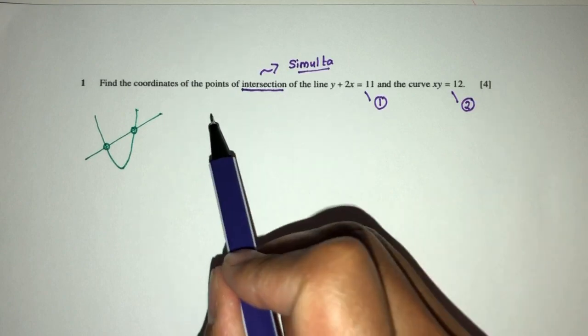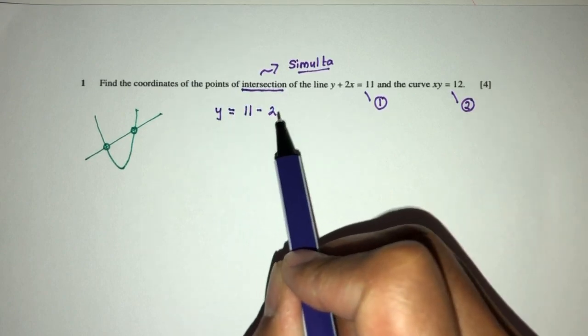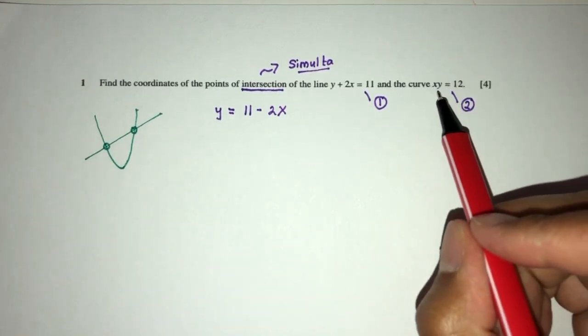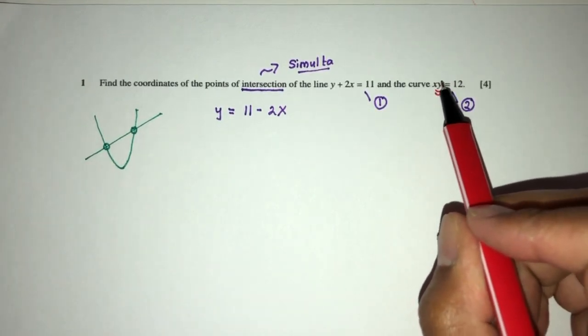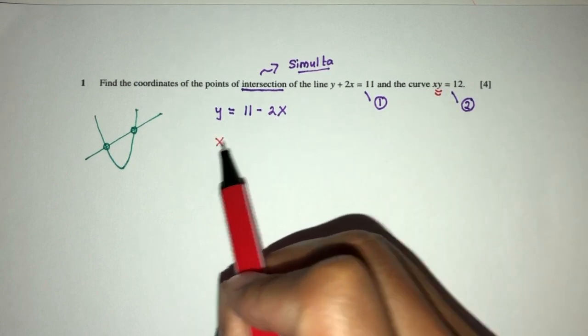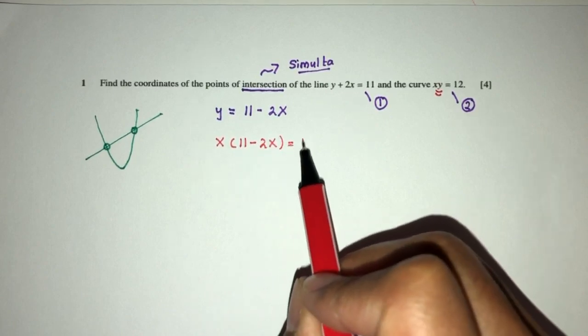So the first one, we can make y the subject. So y equals 11 minus 2x. Now in this equation here, I have x and y. I can replace y by 11 minus 2x. So you'll have x times y, which is 11 minus 2x, equals 12.